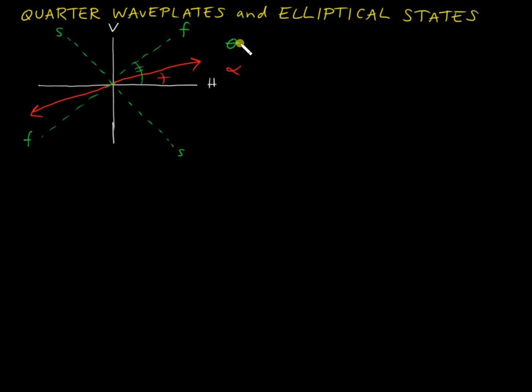So here's our generic problem. What output state is going to be generated for this red state when it passes through a quarter waveplate with the fast and slow axes oriented as they are here?